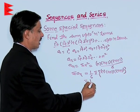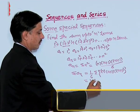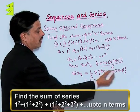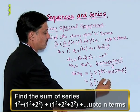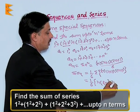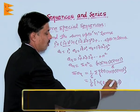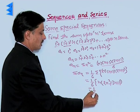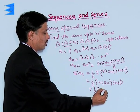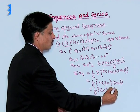So this is coming out to be 1 upon 6 times n into n plus 1 into 2n plus 1. This product gives us 2n square plus 3n plus 1. Finally, when this is multiplied by n, it is coming out 1 upon 6, 2n cube plus 3n square plus n.